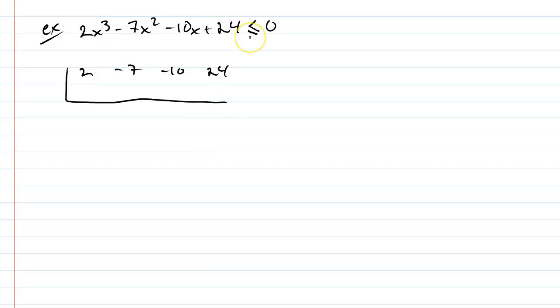Now, just a reminder, what do we look at for what possibilities we could divide? Well, it's 1, 2, 3, 4, 6, 8, 12, 24. And, possible denominators are 1 and 2. So, we could also have 1 half, 3 halves, 2 divided by 2 is 1, 4 divided by 2 is 2, 6 divided by 2 is 3, 8 divided by 2 is 4. So, we have all of these different possibilities.